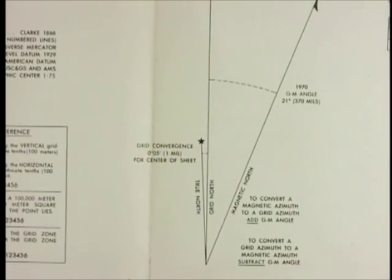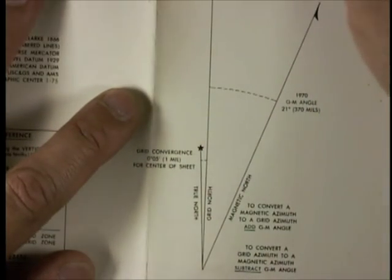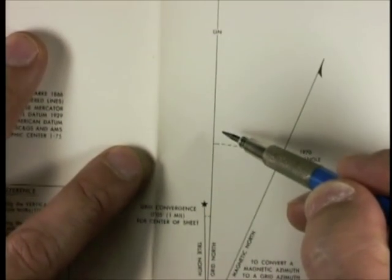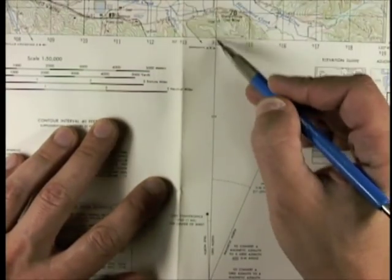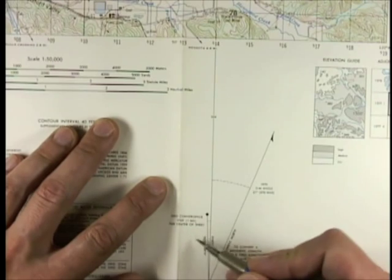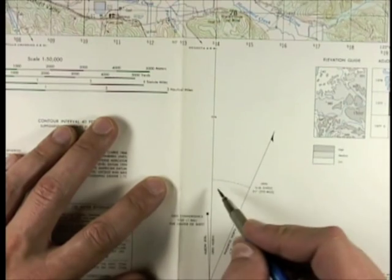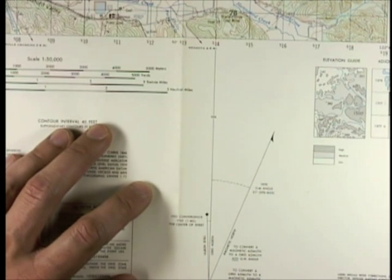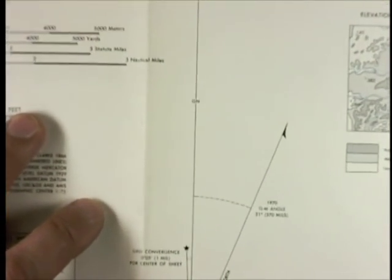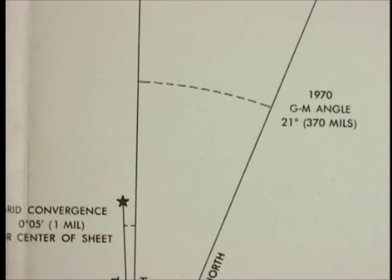We're only interested in these: the large line that lines up with the map, which is the grid north line, and it's actually labeled GN, or says the word grid north down below. It lines up directly with one of the grid lines on the actual map that we've been plotting with. We're going to ignore true north for now. The other one is magnetic north. It shows the angle, and it actually lists the angle numerically as well, in both degrees and mils.